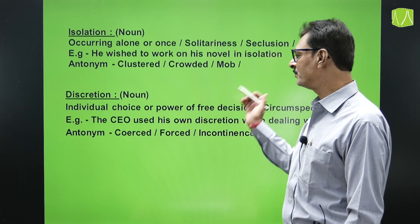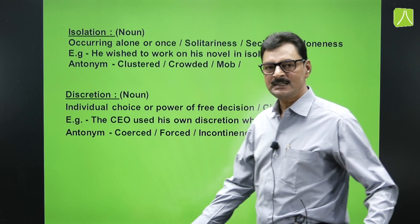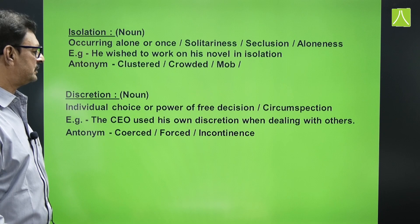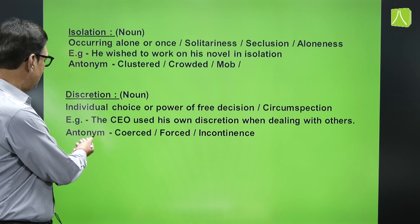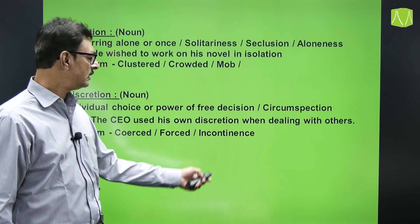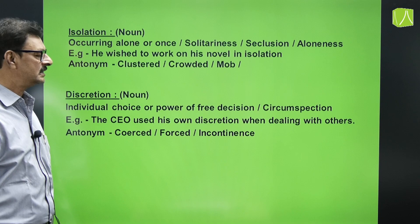One more good word: 'discretion,' which is a noun. Discretion means individual choice or power of free decision — free decision-making. Synonym: circumspection. Example: 'The CEO used his own discretion when dealing with others.' Antonyms are coerced, forced, compelled, or incontinence. Discretion is free choice.